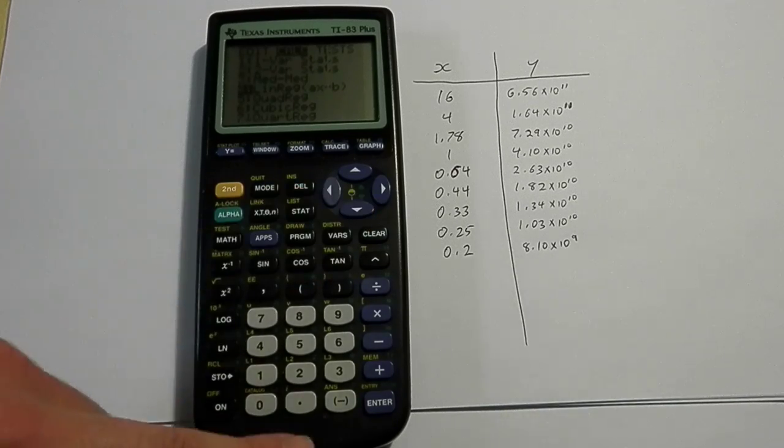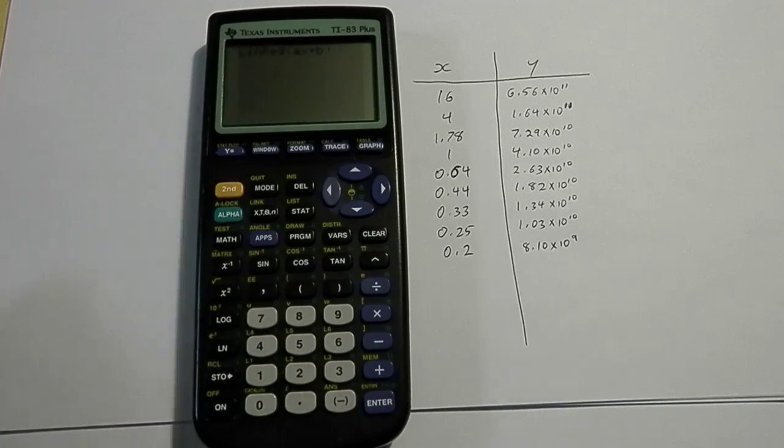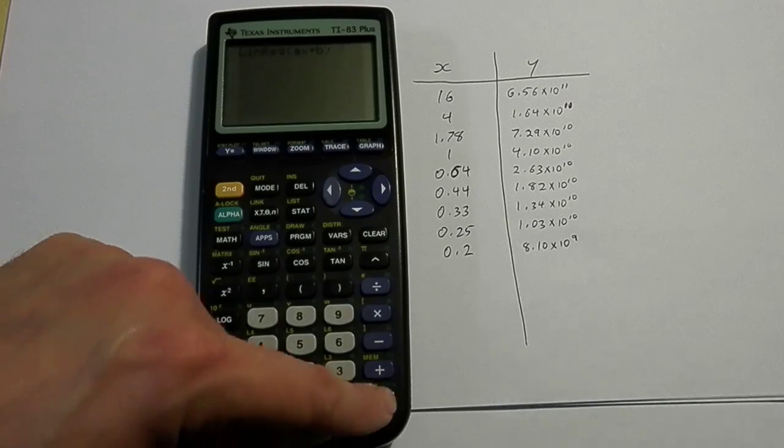So you can either scroll down to it and hit enter, or just press the 4 button. It comes up with a screen saying that, hey, I'm going to do a linear regression for you. And it's blinking. You hit enter.